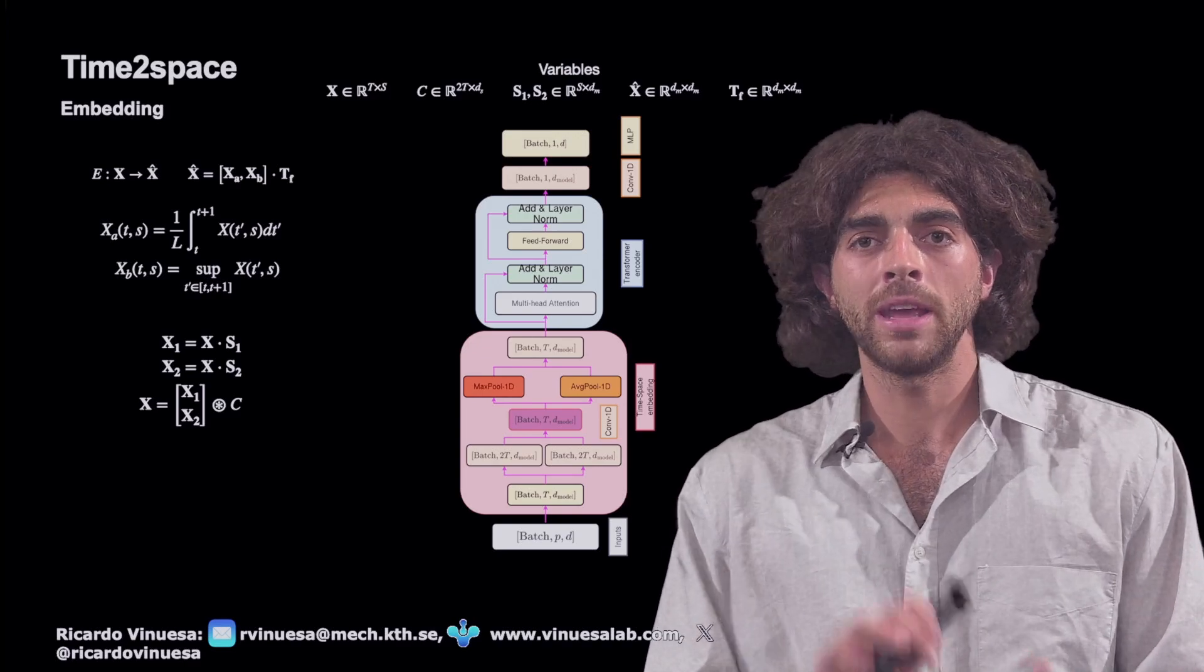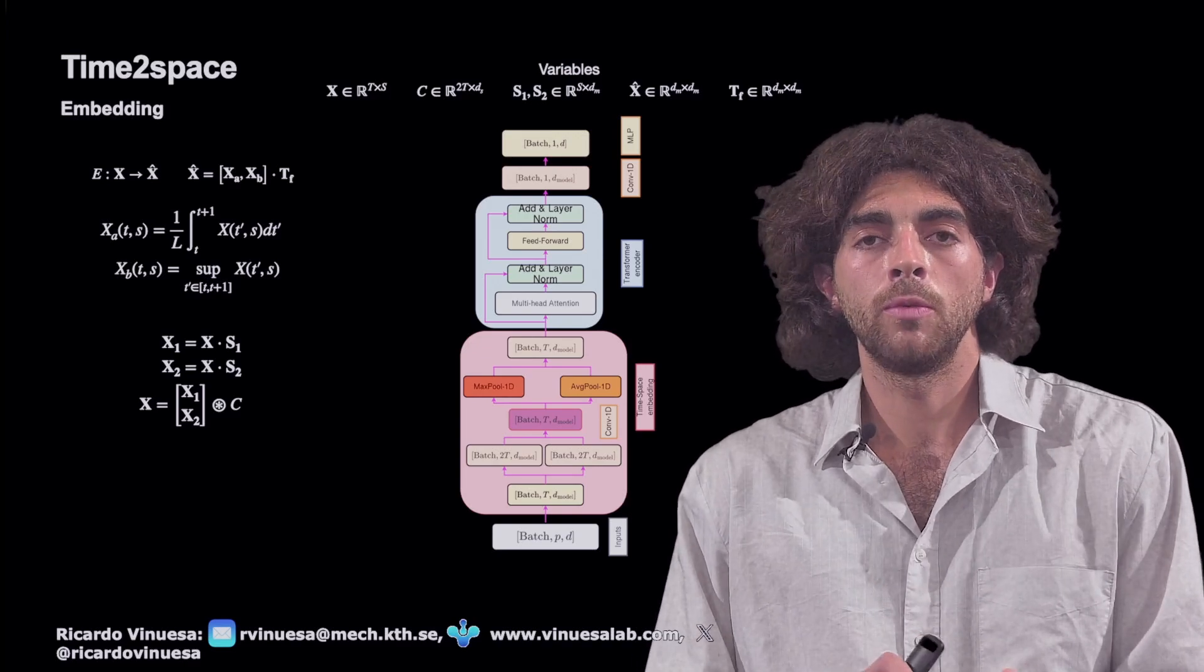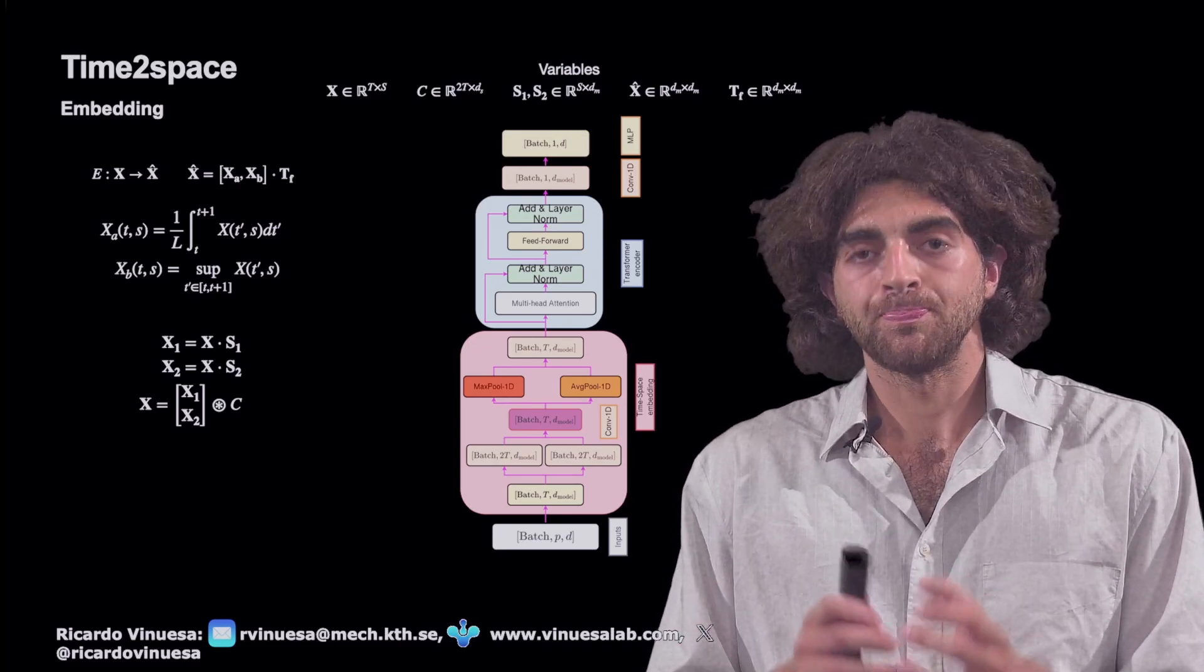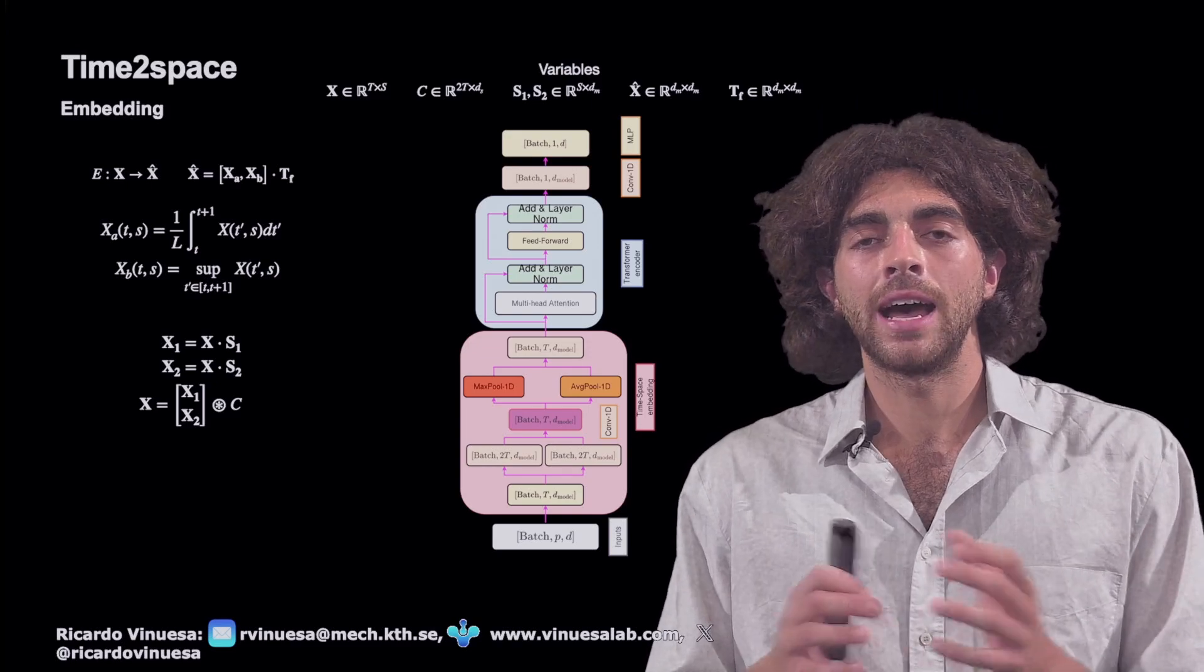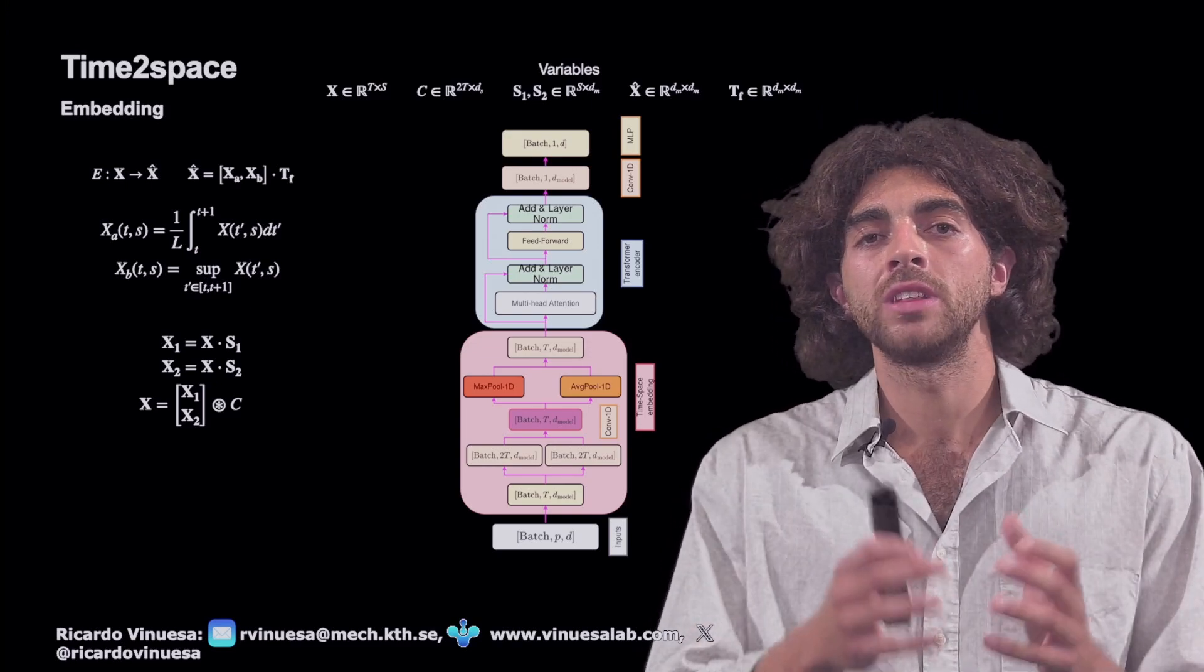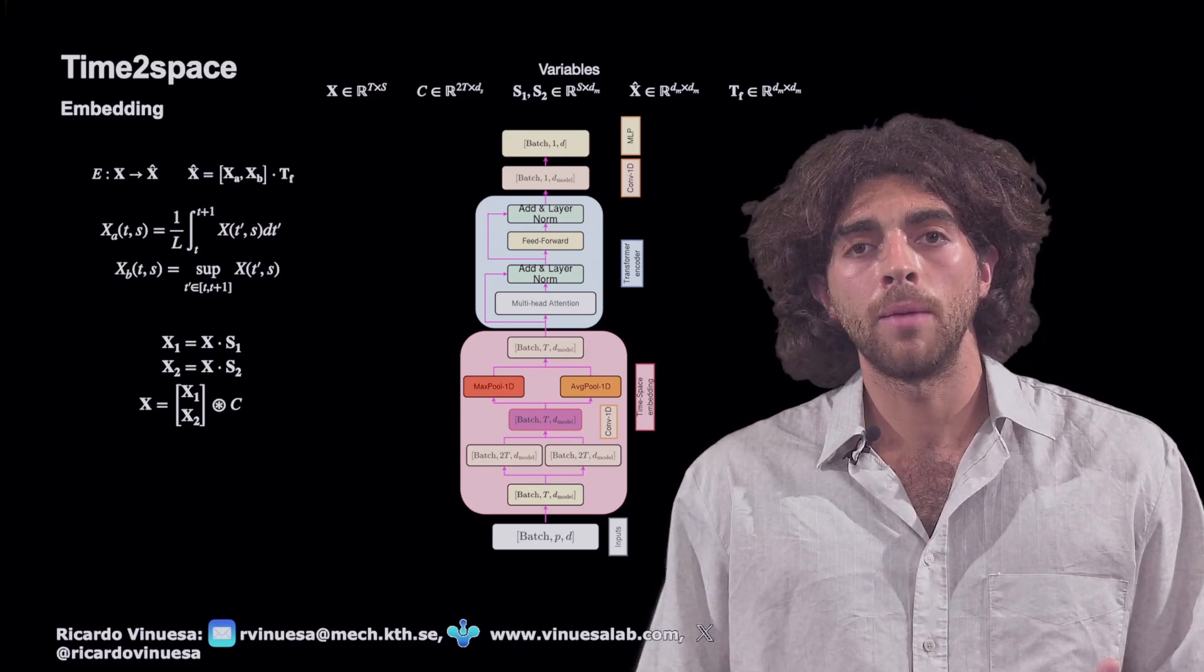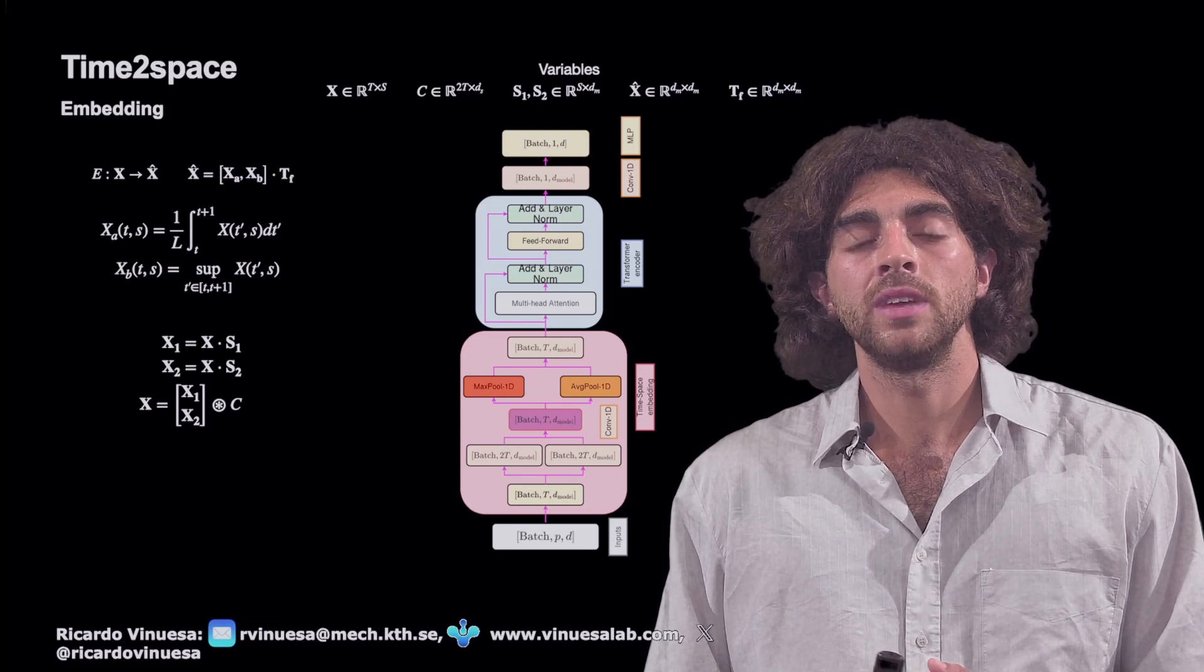So at the end, our matrix, our pseudo-input which will be already tokenized, will inherit the average and supremum behaviors. One can interpret the XA as a moving average, and one can interpret the XB as a supremum.